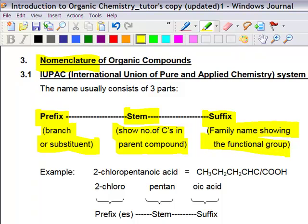For example, let's look at 2-chloropentanoic acid. We have five carbons here starting from the acid: one, two, three, four, five. And hence the number of carbons shown is penta. The family name is oic acid. And 2-chloro is the substituent. The chlorine is at the second position.